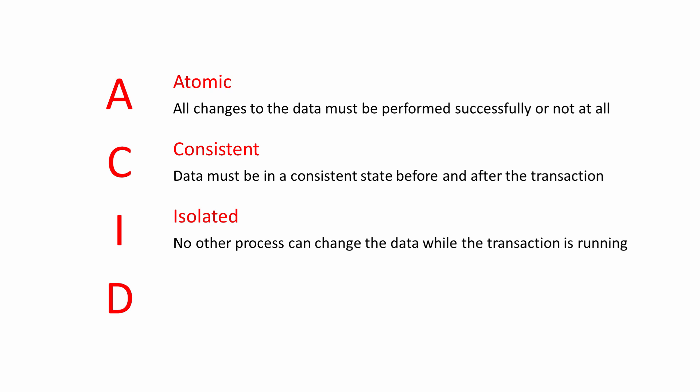A transaction must be isolated — no other person or process can change any part of the data while the transaction is running. For example, it shouldn't be possible to update someone's bank balance if it's already being accessed by a transaction in progress. A transaction must be durable — after the transaction has completed, the changes made by the transaction should persist even in the event of a system crash.